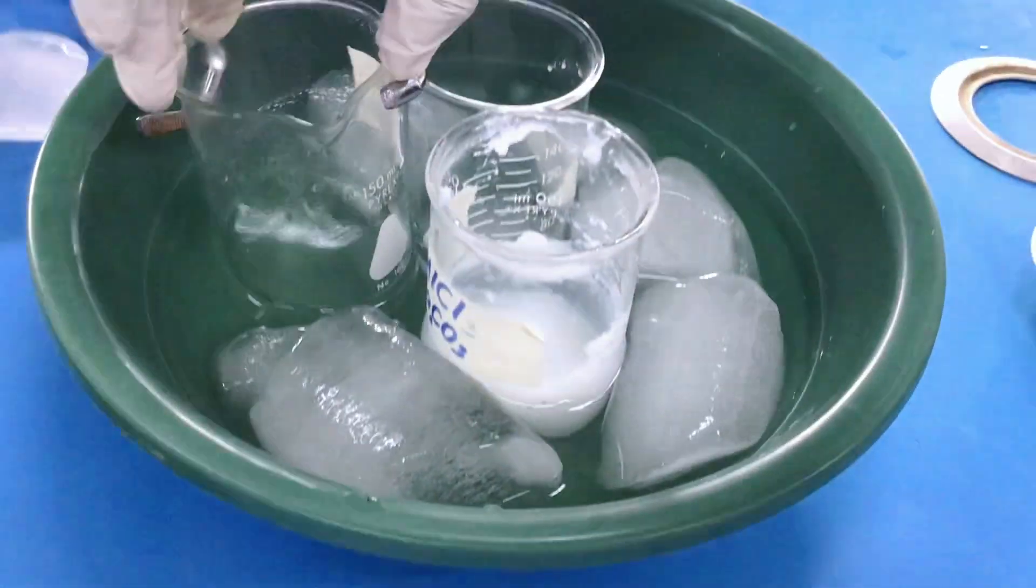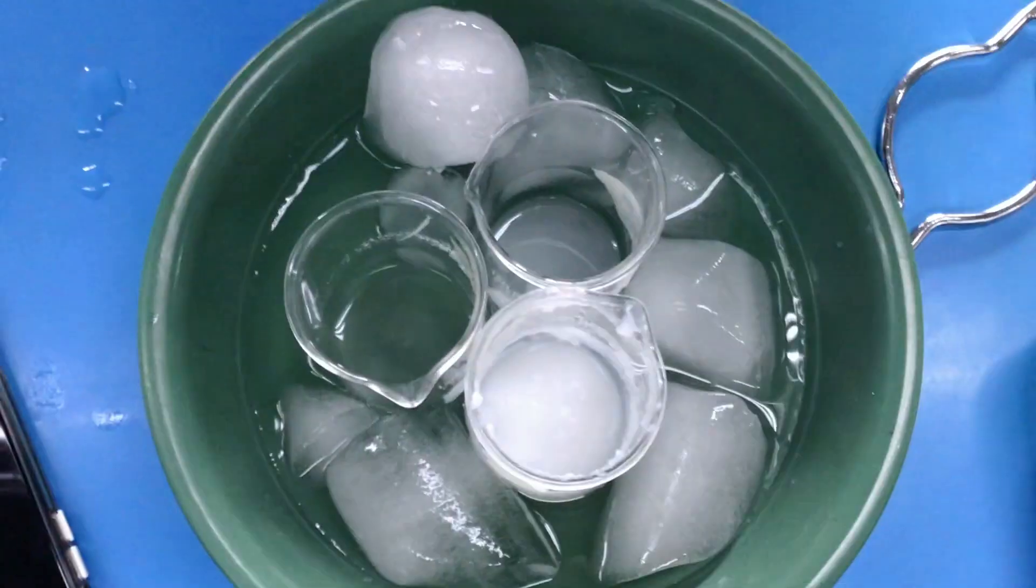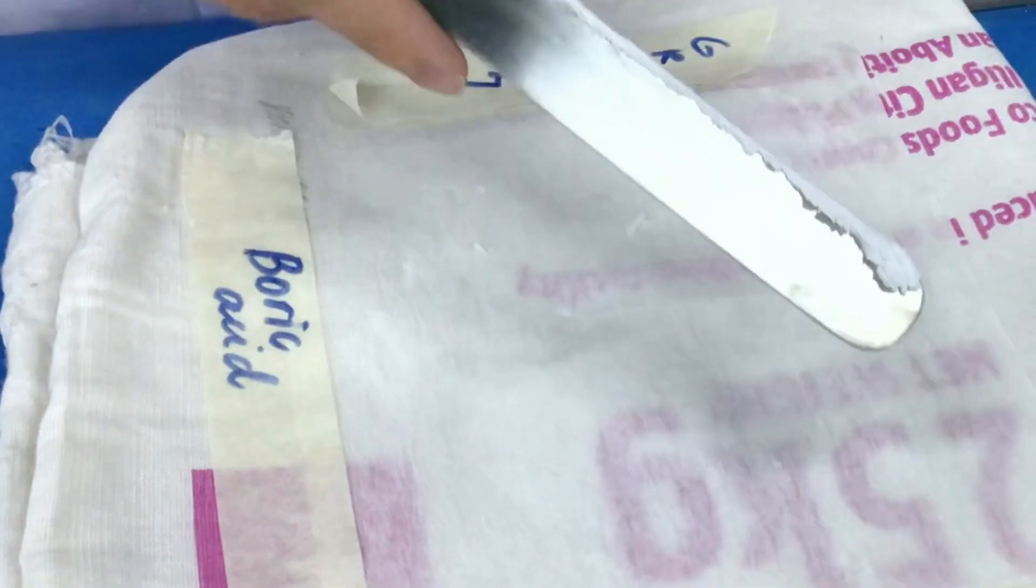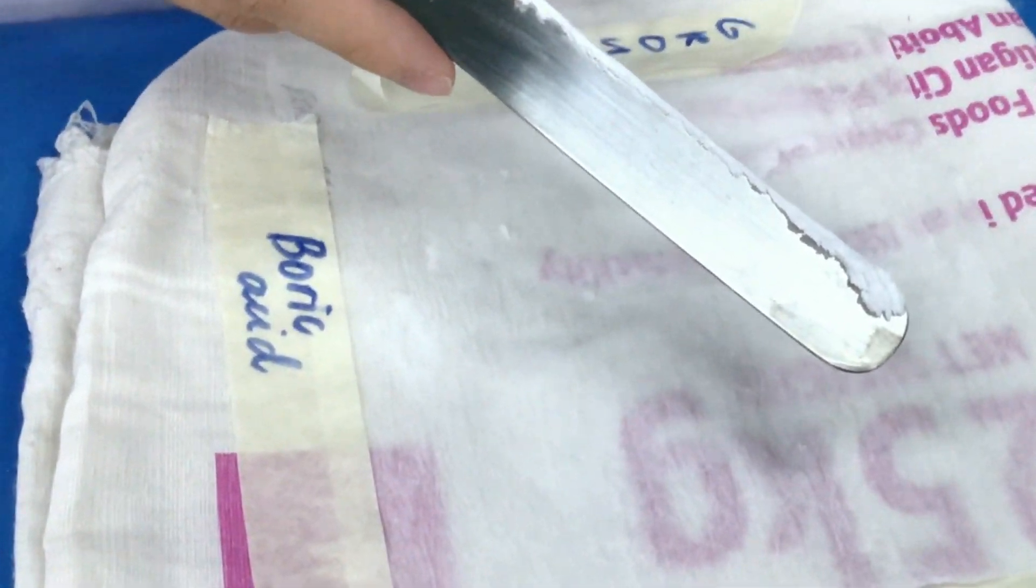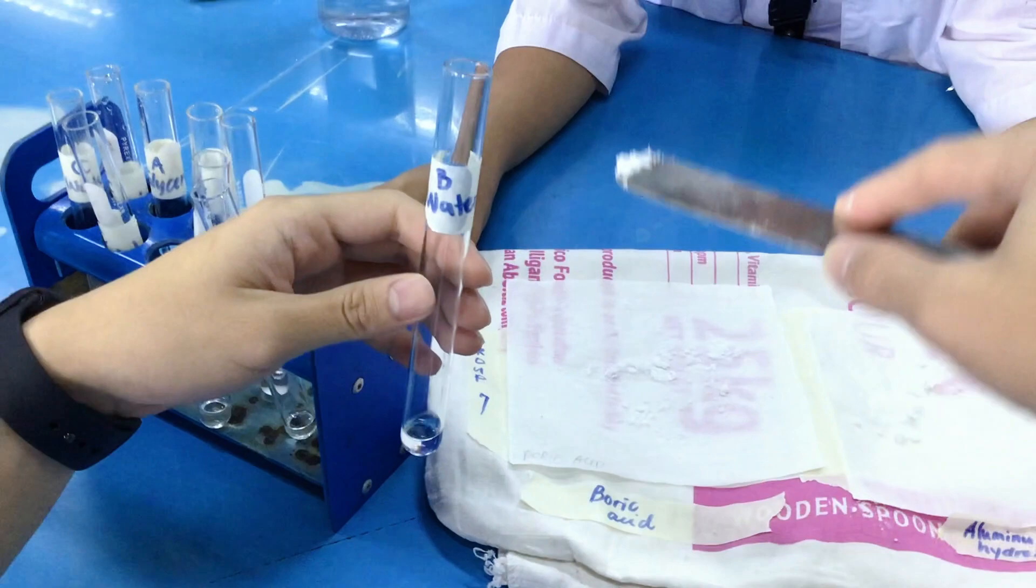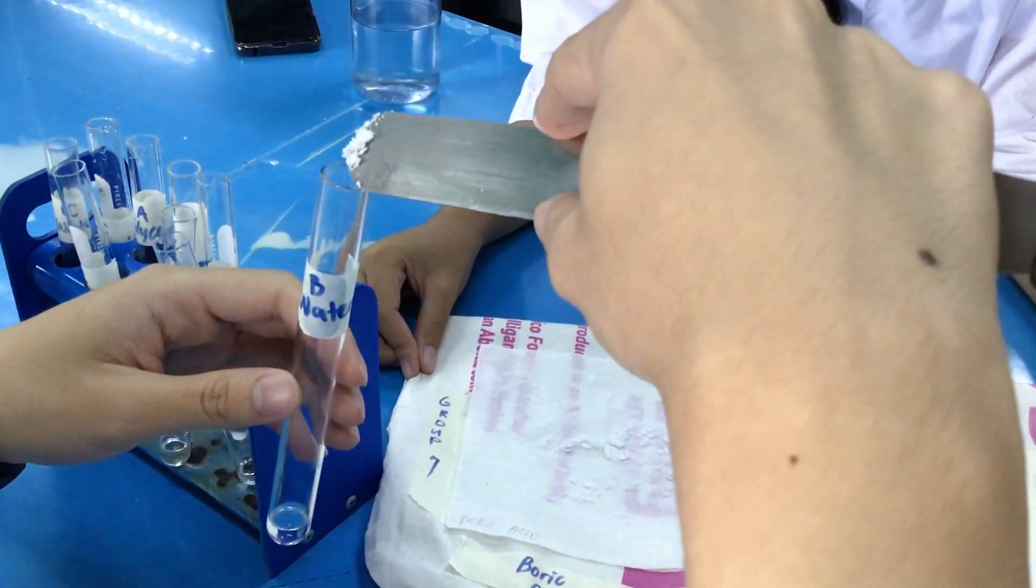Air dry the filtered compound, then scrape it off using a spatula. White powder of boric acid is successfully obtained. A pinch of it is then added to water, alcohol, and glycerin.